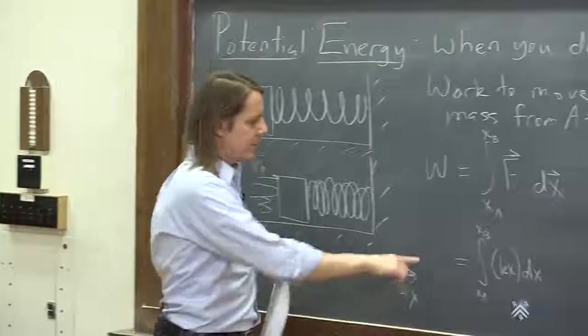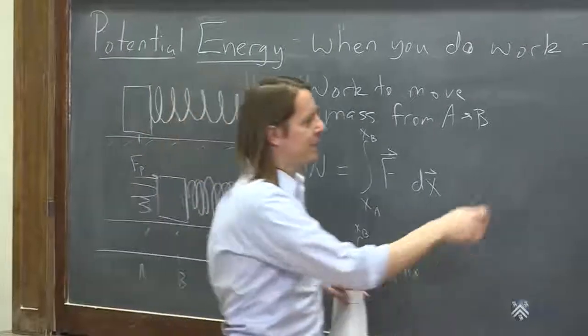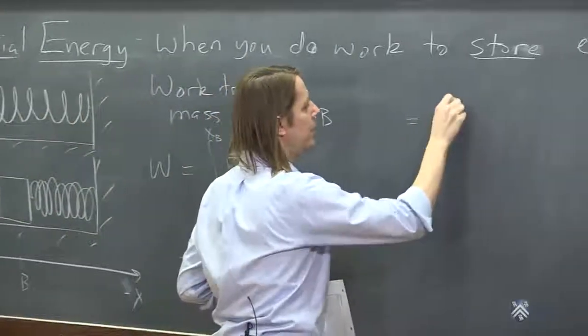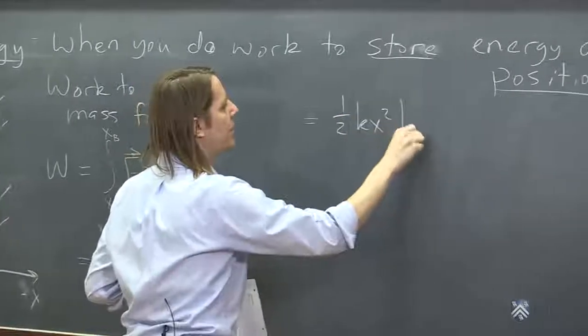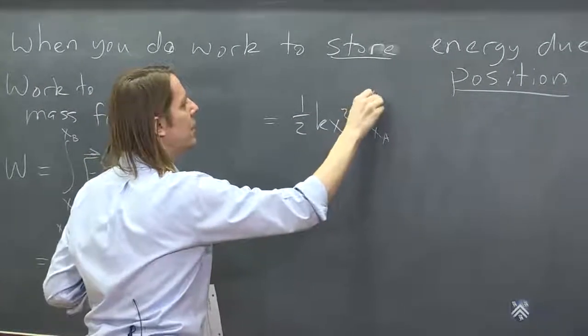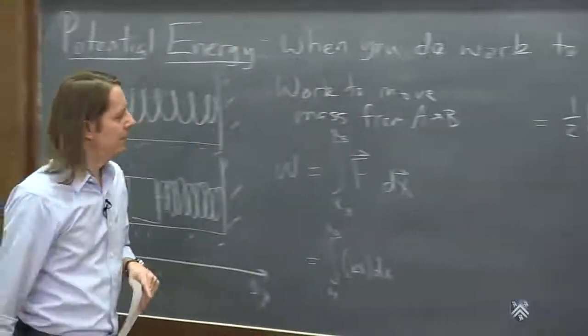So this integral of kx becomes 1/2 kx squared, 1/2 kx squared evaluated from x_A to x_B.